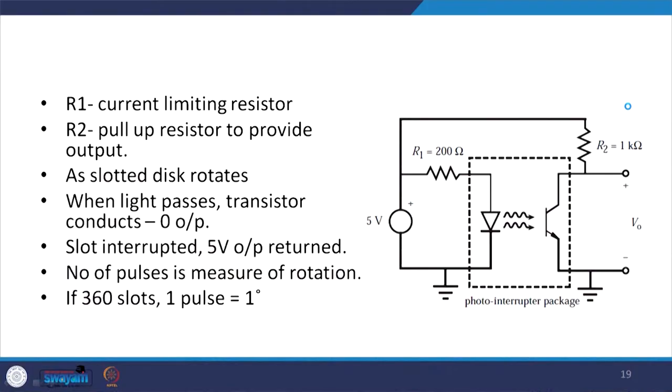A disk is attached to the motor and passes through the slot. Each slot provides a digital pulse as it interrupts the light beam during rotation. In the circuit, there is a current-limiting resistor and a pull-up resistor to provide the output. When light passes through, the transistor conducts and the output is zero. When the slot interrupts, 5 volts is returned at the output. The number of pulses measured gives the number of rotations — for example, if there are 360 slots, one pulse corresponds to one degree.